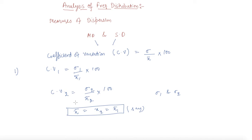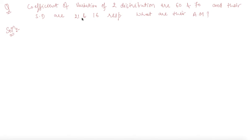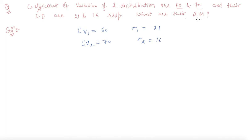Now let us discuss some questions based on this. We are given a question in which the coefficients of variation of two distributions are given: Cv1 = 63 and Cv2 = 70. The standard deviations are σ1 = 21 and σ2 = 63. We need to find their respective arithmetic means. I will use the formula: Cv = (σ / x̄) × 100.